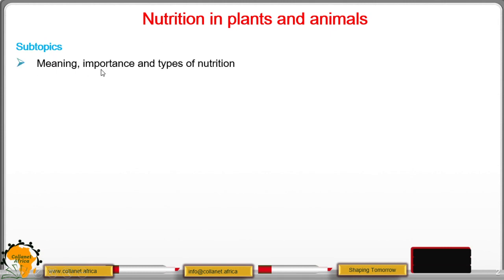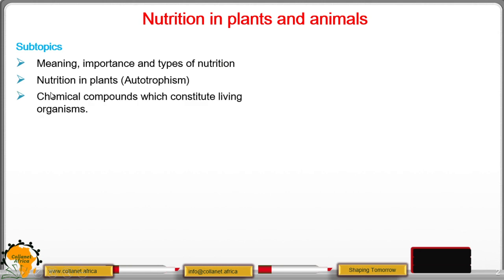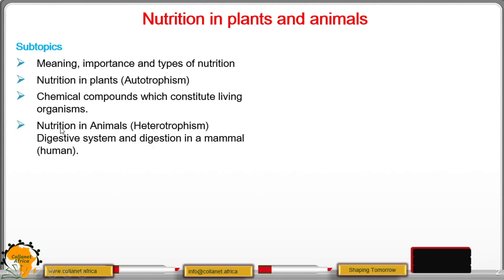Under this topic of Nutrition in Plants and Animals, we have the following subtopics: meaning, importance, and types of nutrition; nutrition in plants, also known as autotrophism; chemical compounds which constitute living organisms; and nutrition in animals, also known as heterotrophism.